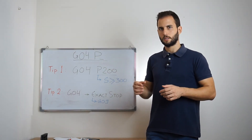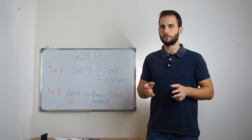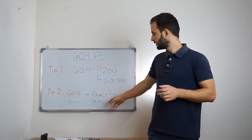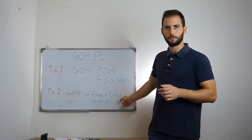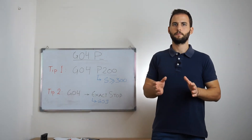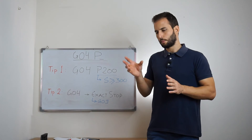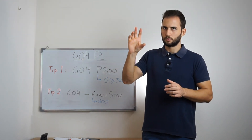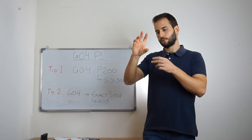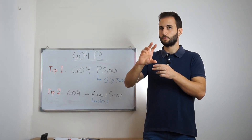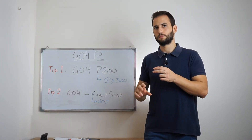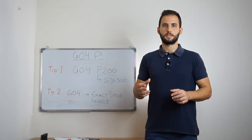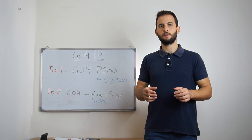The second tip is that the dwell command G04 can substitute the command G09, which programs exact stop. This means that when we program dwell, the controller has to stop the axis movements there and then continue. For more on programming exact stop, you can see our dedicated video and you can find the link below.